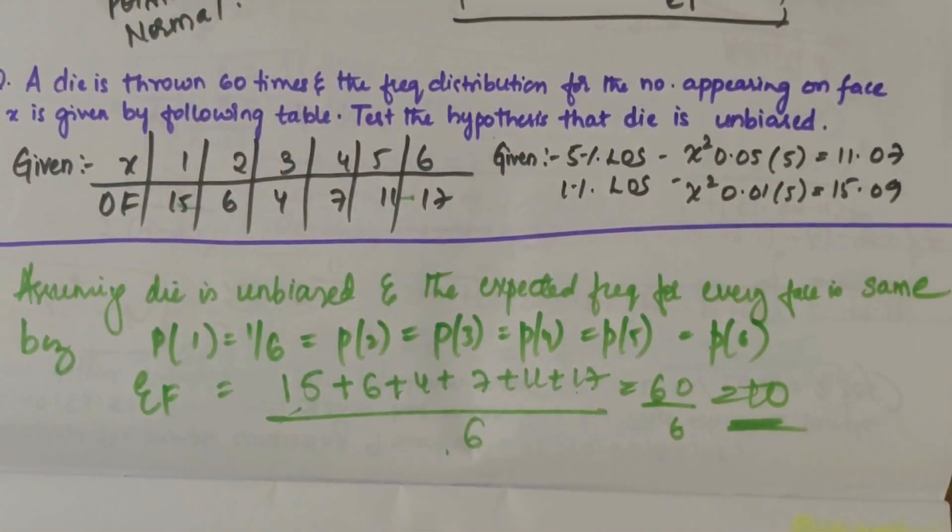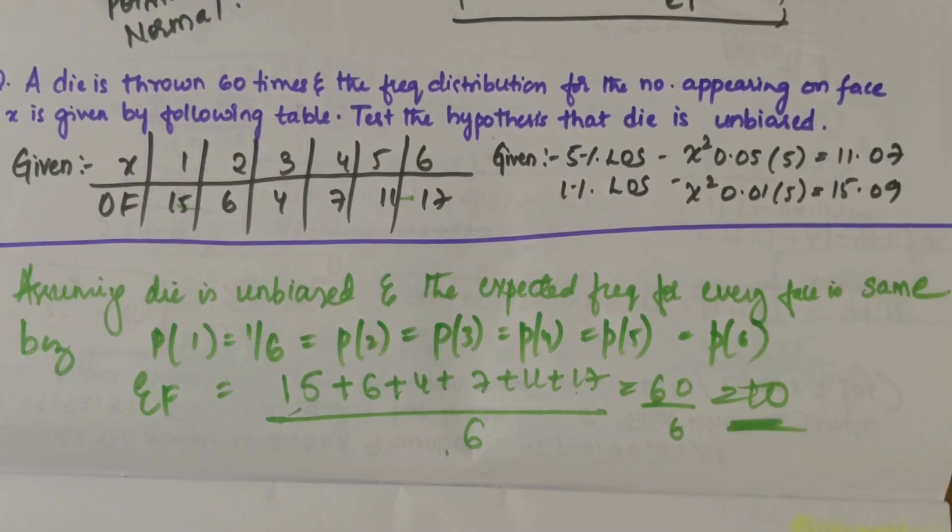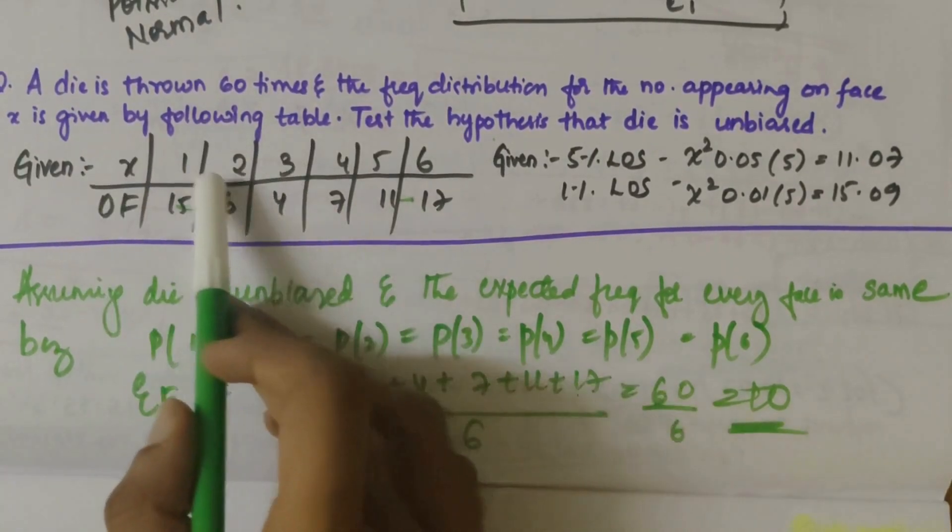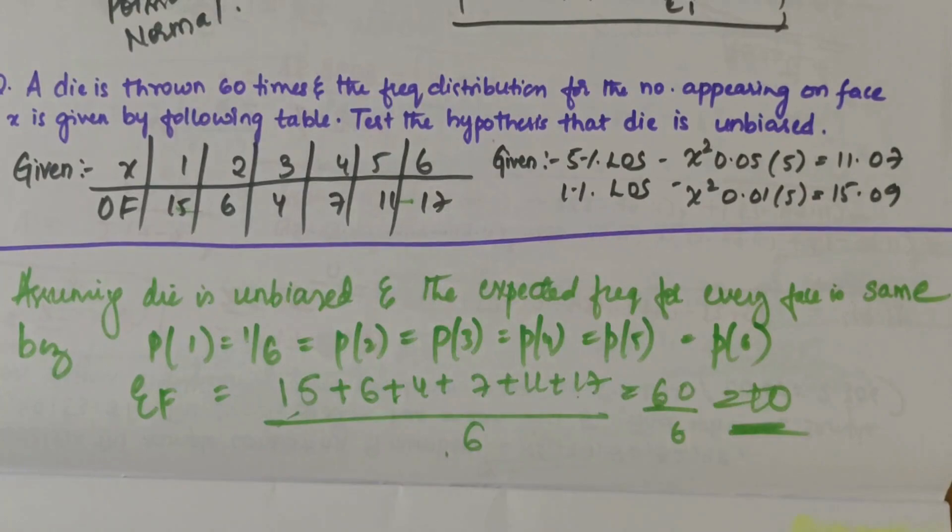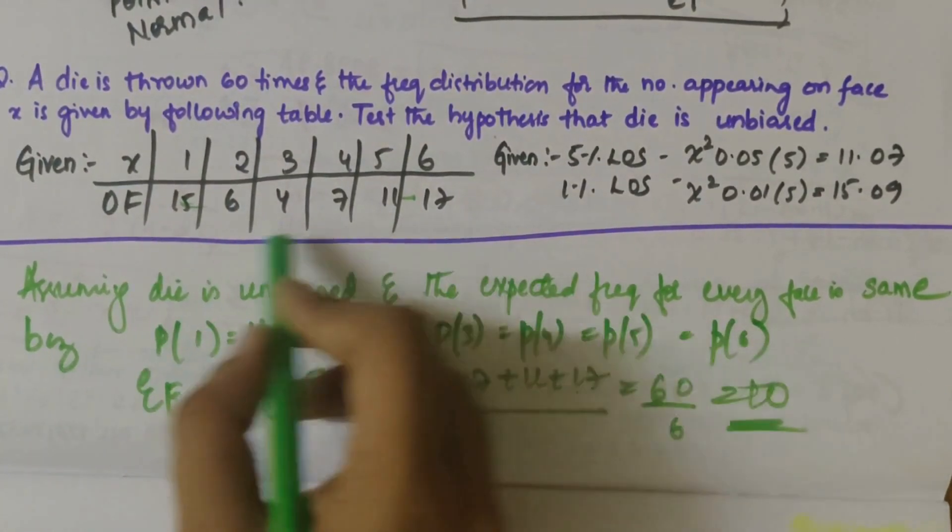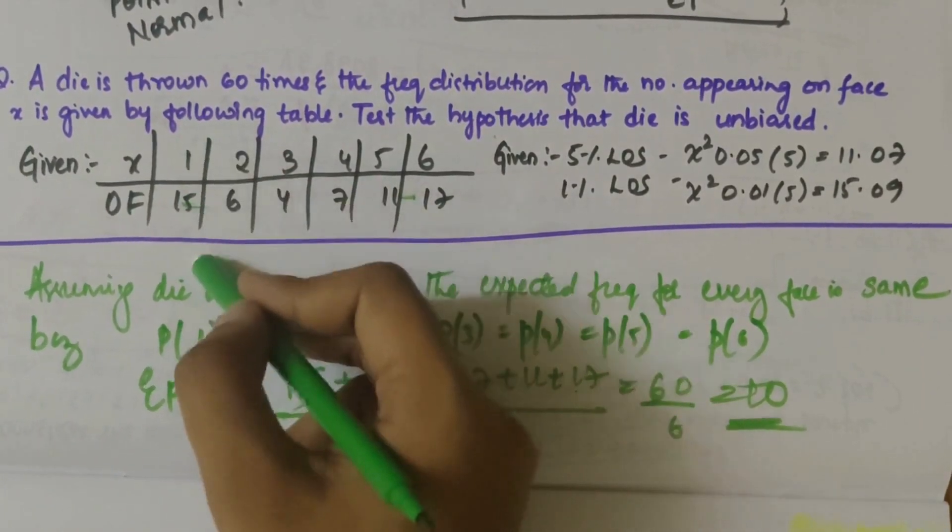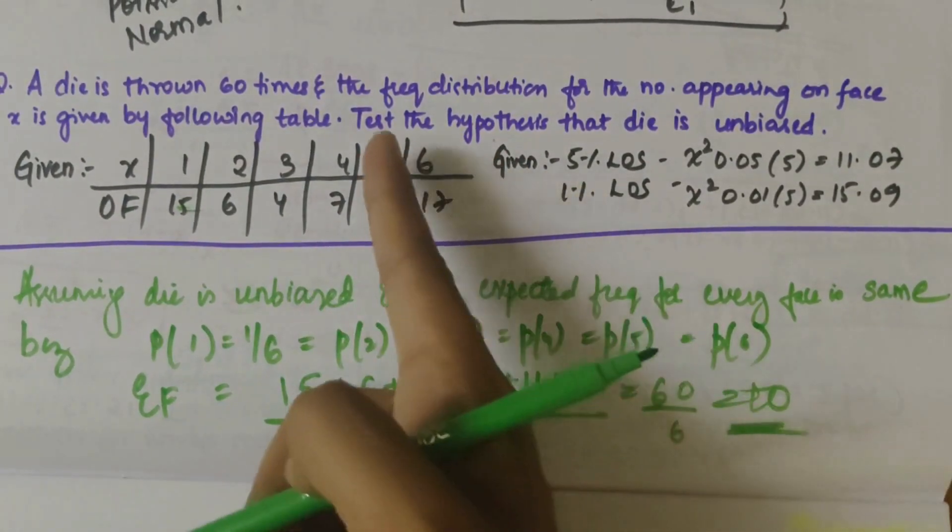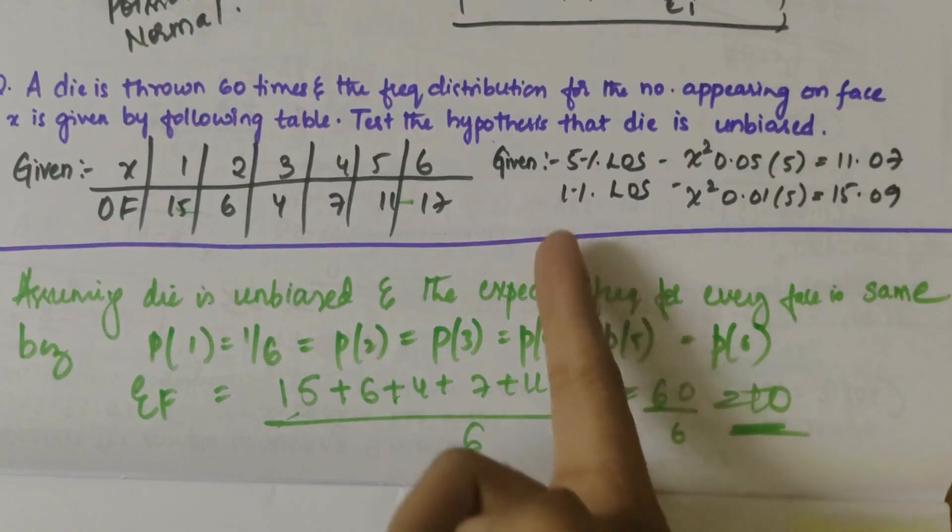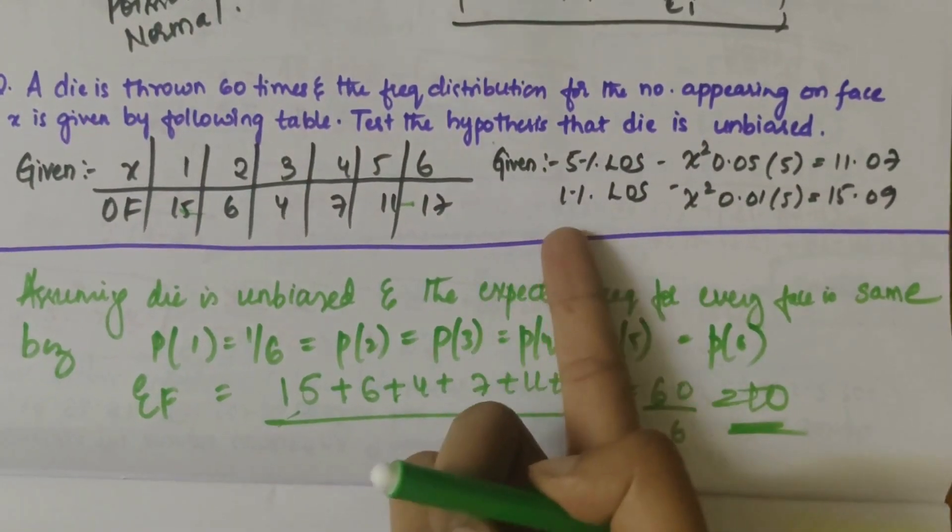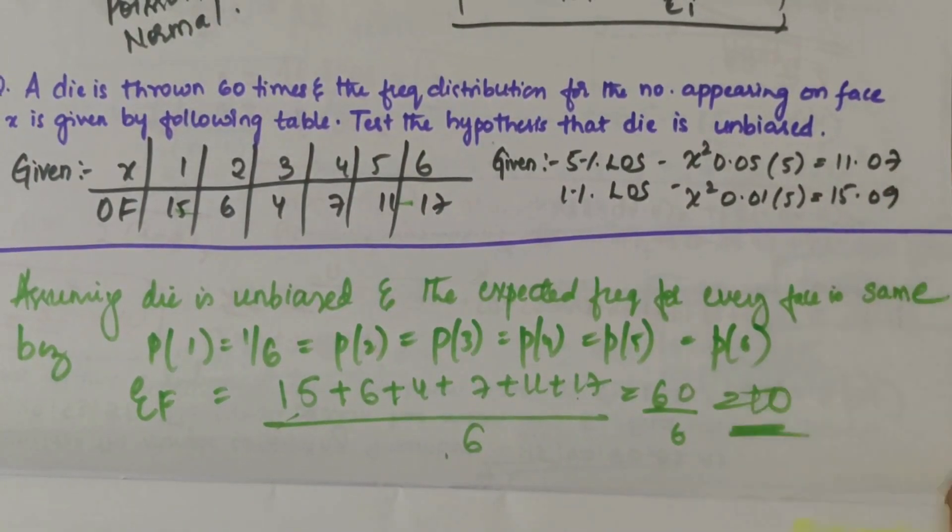Now let's discuss the numerical. The problem statement says that a die was thrown 60 times and the frequency distribution for number appearing on face x is given by the following table. A die has 6 faces from 1 to 6, and the observed frequency tells how many times the following faces have been repeated. We have to test the hypothesis that the die is unbiased at 5% level of significance and 1% level of significance.